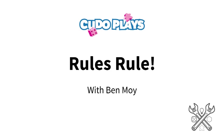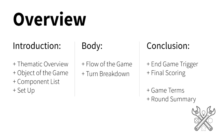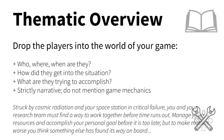Hi everyone, I'm Ben and I've been a Kudo Plays competitor since Season 2. Today I'm going to talk a little bit about rules layout and hopefully how we can compose these files for turn-in in February. We're going to go over the introduction, body, and conclusion — that includes things like the thematic overview, the object of the game, component list and setup, as well as the flow of the game and how turns break down, and finally how the end game is triggered and what final scoring is like. We'll also potentially include a game terms and round summaries section at the very back of the rulebook.